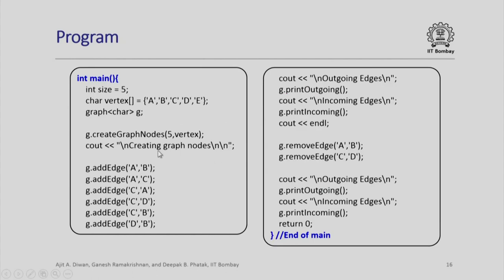The main program is written simply. For demonstration we use a small graph with only 5 vertices: A, B, C, D, and E. We define the graph as G and create the 5 nodes. We then define all edges explicitly using G dot add edge. Note that in a real program edges would have to be input dynamically since there could be hundreds. Once done, we invoke the outgoing and incoming functions to output the entire graph. We then demonstrate removal of two edges using the remove edge function and again invoke outgoing and incoming edges to confirm those edges are removed.